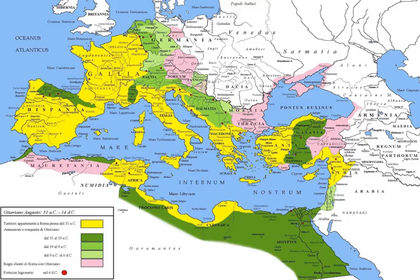In ancient Rome, a province was the basic and, until the Tetrarchy, the largest territorial and administrative unit of the empire's territorial possessions outside Italy. The word province in modern English has its origins in the Latin term used by the Romans. Provinces were generally governed by politicians of senatorial rank, usually former consuls or former praetors.